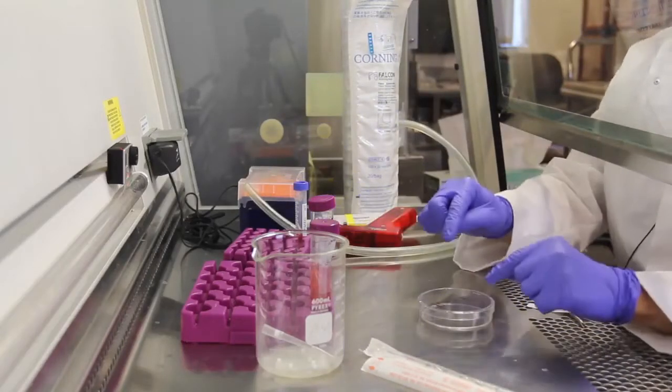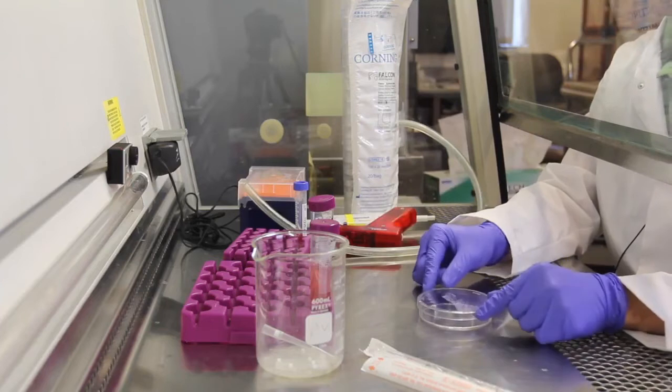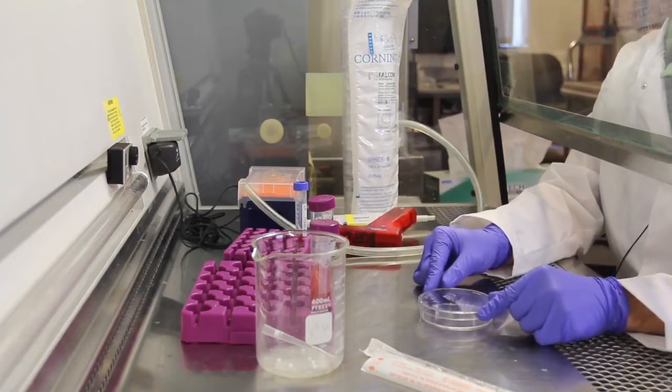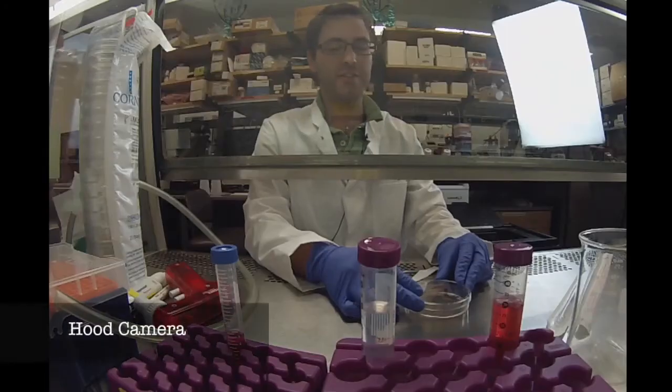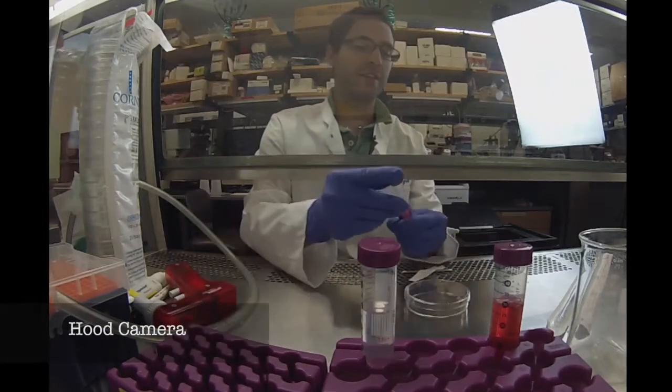All of the healthy cells are currently still on this plate and they're attached to the bottom of the plate via extracellular proteins. So the way to lift the cells off of the plate is to digest those extracellular proteins using trypsin.